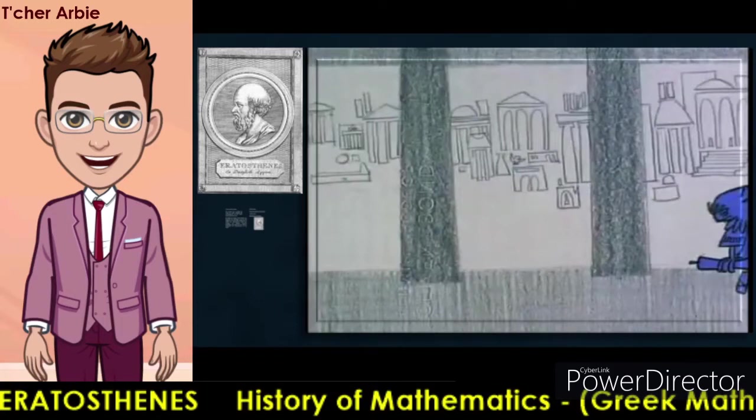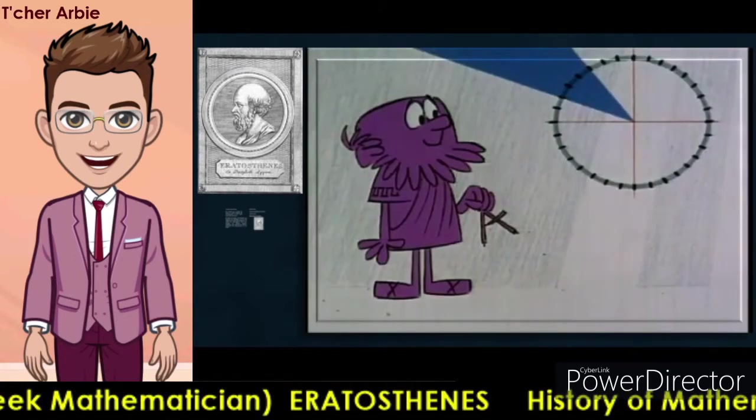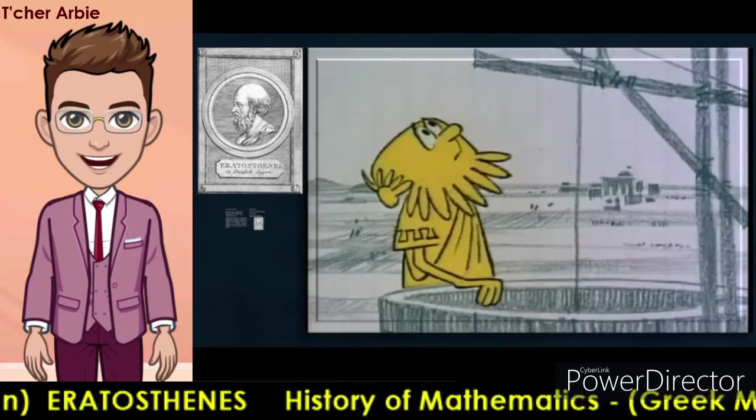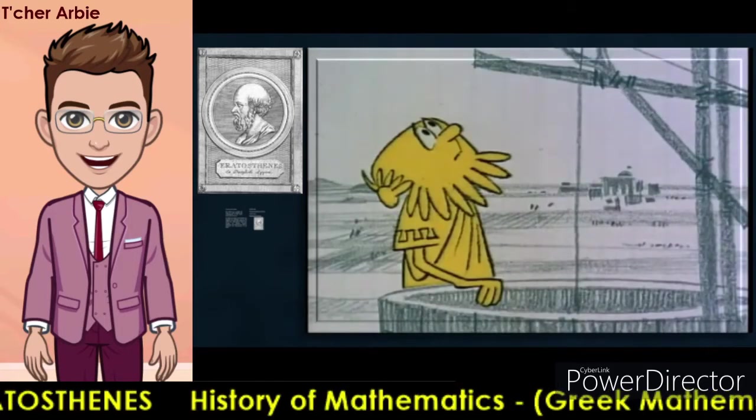Greeks before him had divided the circle into degrees and had measured angles. With this information and a logical mind, he measured the earth. Here is how: while visiting the city of Cyene one midsummer's day, Eratosthenes noticed that the reflection of the sun could be seen in the bottom of a deep well.